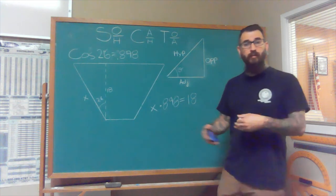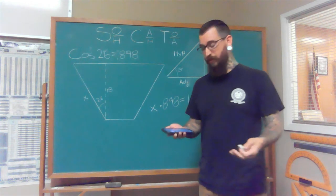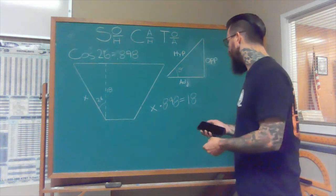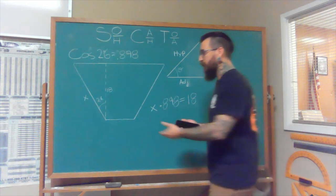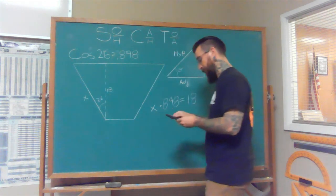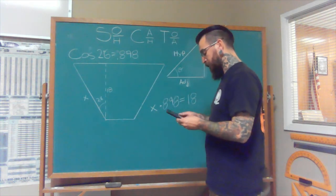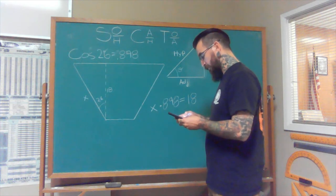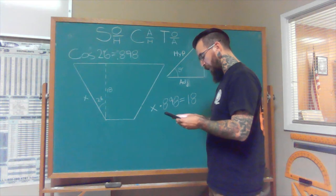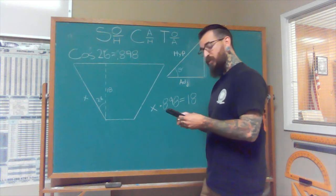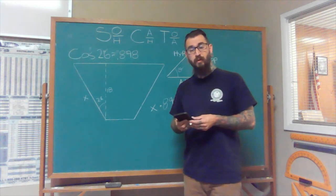So the opposite of multiplication, right back to division. So if we divide 18 by 0.898, it's going to give us the length of the hypotenuse right here. 18 divided by 0.898 equals, and the answer I got is 20.044.